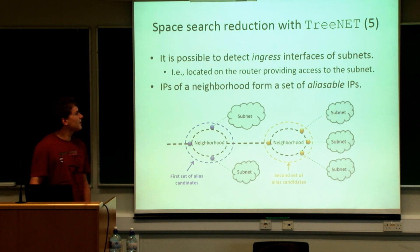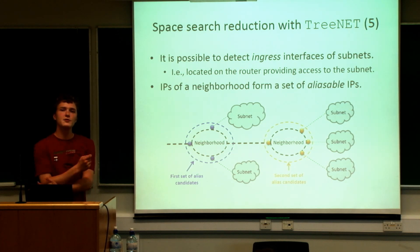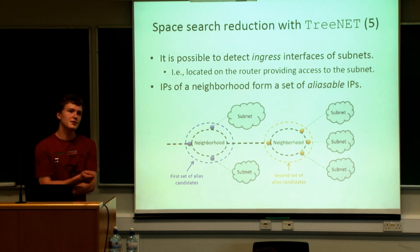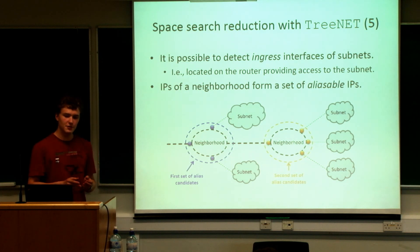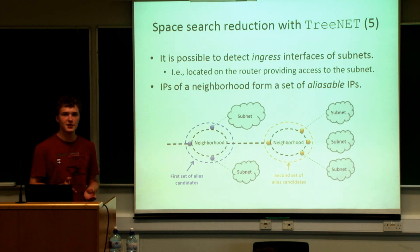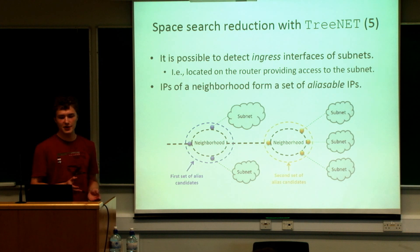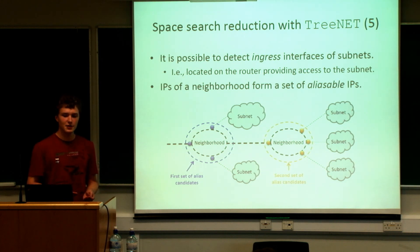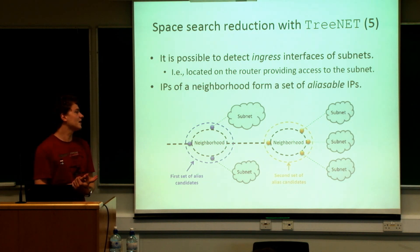Within subnets, we are actually able to discover interfaces that are likely router interfaces due to timing variations. If we gather all these interfaces along with interfaces from the traceroute records, we obtain for each neighborhood a set of router interfaces — and therefore a set of aliasable IPs, which we also refer to in the paper as sets of alias candidates.